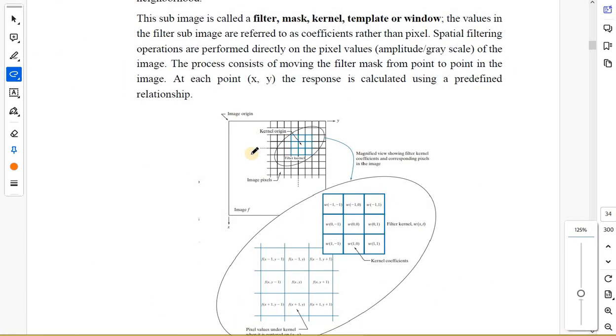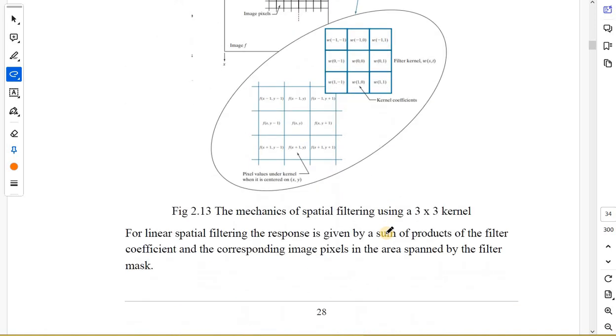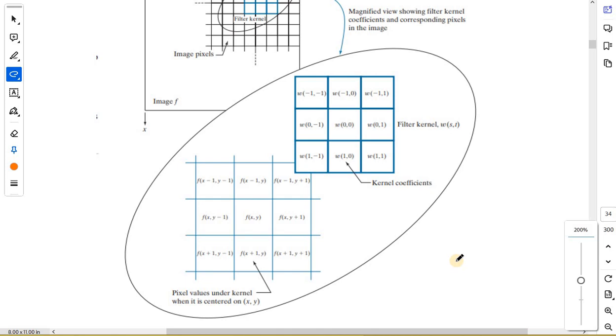The size of these masks or kernels or windows is going to be in odd dimensions. Why odd dimension and not even dimension? Because if you use even dimensions, you won't get a center pixel. You want a center pixel, so you have to consider odd numbers. The mask can be of size 3 by 3, 5 by 5, 7 by 7, 9 by 9, 11 by 11, and so on.